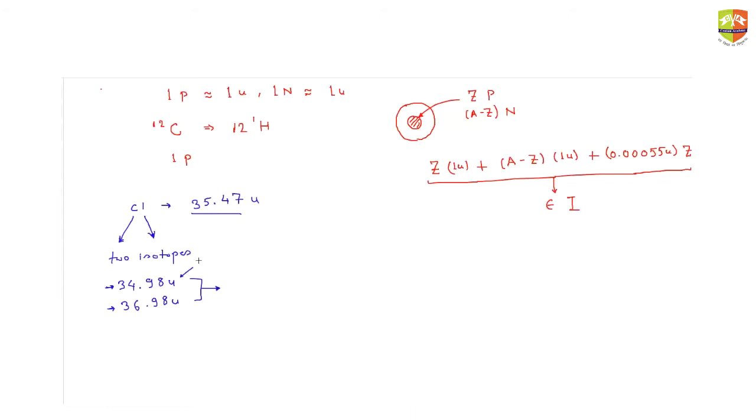Out of 100 grams it is found that this particular isotope is present 75.4 grams and the remaining amount is 24.6 grams. So can I take just the average of these two? You multiply with the percentages. Exactly, you have to take the weighted average. What if 99.99% is just this? The chlorine mass will be closer to this. That's why you have to take the weighted average.